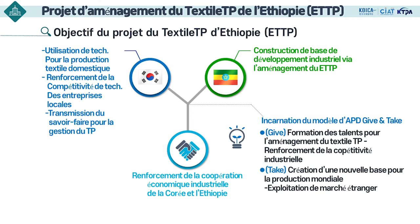Par conséquent, la Corée utilise la technique de production textile de l'Éthiopie afin de renforcer la compétitivité technique des entreprises locales et transfère également le savoir-faire de la gestion d'un technoparc de style coréen. L'Éthiopie établira un textile technoparc dans son territoire, jetant les bases de la croissance industrielle. La Corée soutient donc la formation de la main-d'œuvre professionnelle tout en établissant une nouvelle base de production mondiale, réalisant un modèle give-and-take, gagnant-gagnant.